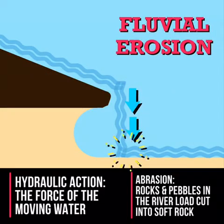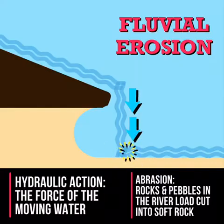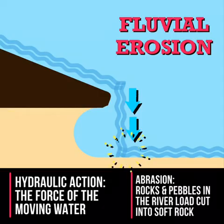Erosion may occur through hydraulic action caused by the force of the moving water and abrasion as the rocks and pebbles which make up the river load cut into the soft rock of the riverbed.